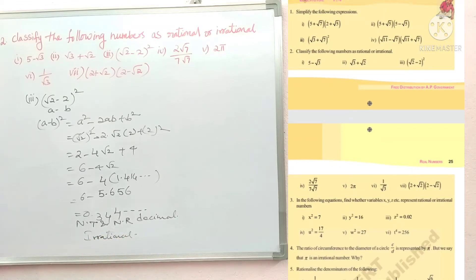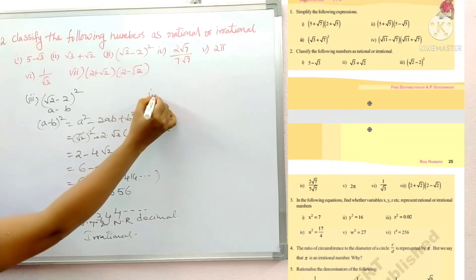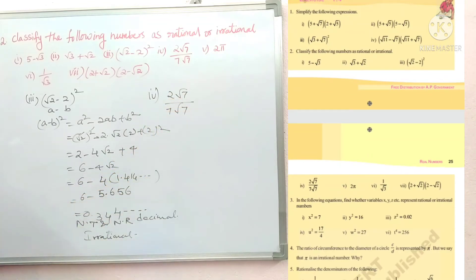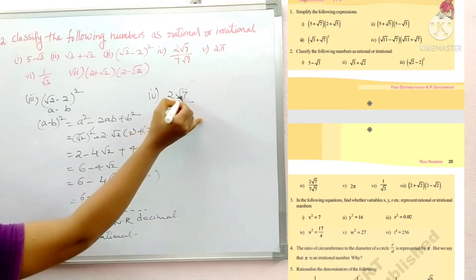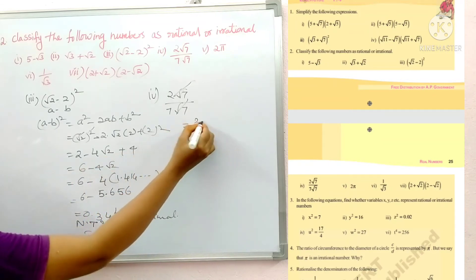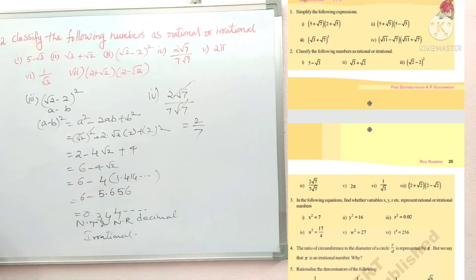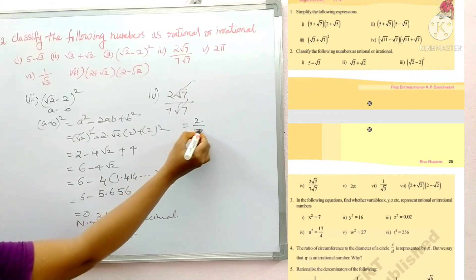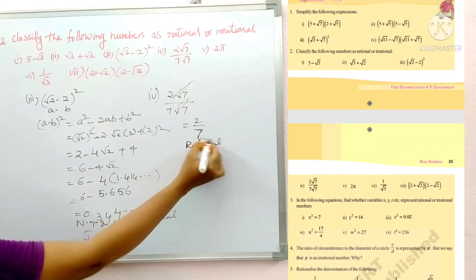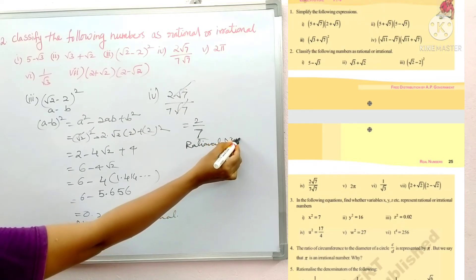Our fourth problem: 2 root 7 by 7 root 7. Here root 7 and root 7 cancel out. The remaining value is 2 by 7. This is in the form of p by q, so this is a rational number.